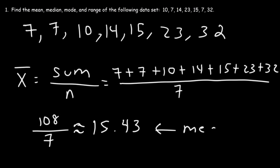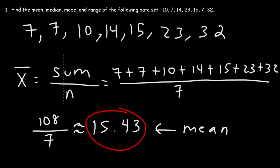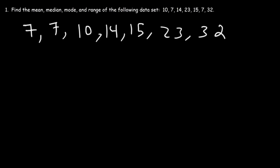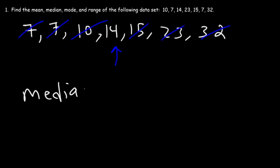So that is the mean — that's how you can find it. Now what about the next thing? How can we find the median of this data set? The median is basically the middle number. What I like to do is eliminate the first and last number and work towards the middle until I'm left with the middle number. In this example, the median is equal to 14.